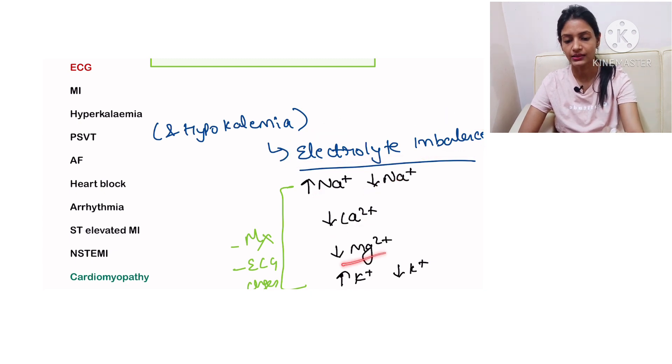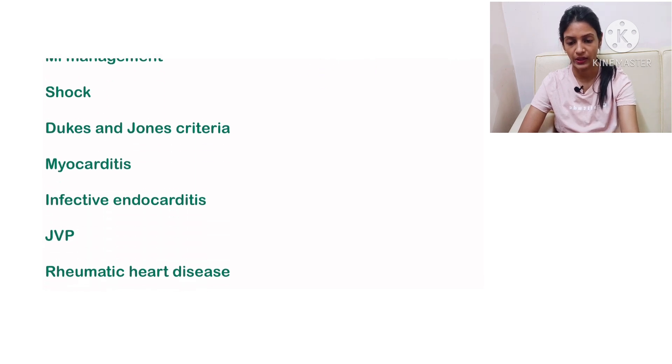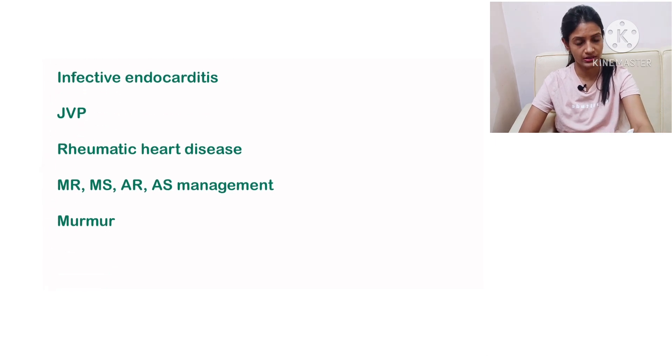Next, other than the ECG they can ask you cardiomyopathy, pericarditis, MI management, shock, Duke's and Jones criteria, myocarditis, infective endocarditis, JVP, rheumatic heart disease, and MR/MS, AR/AS management and murmurs. This is about the cardiovascular system.